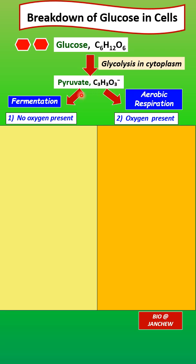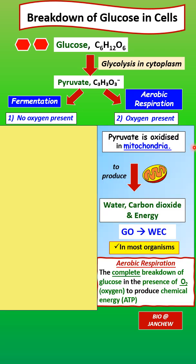Next, the pyruvate can either undergo fermentation or aerobic respiration, depending on whether oxygen is present or not. If oxygen is present in the cell, then aerobic respiration continues, and the pyruvate will be moved into the mitochondria — an important organelle for aerobic respiration — where it is oxidized or broken down.